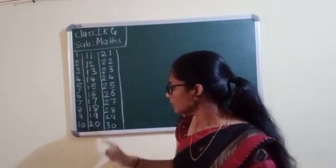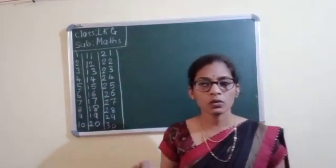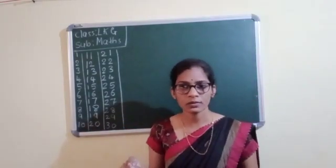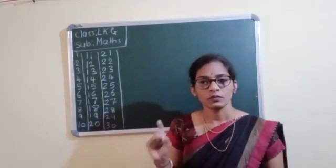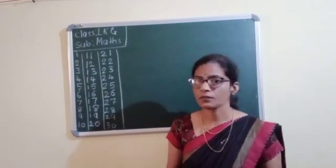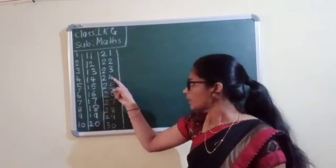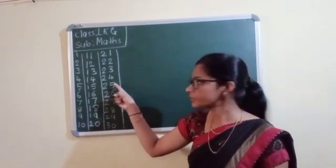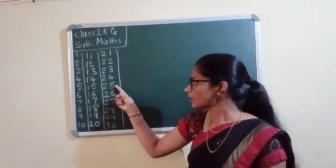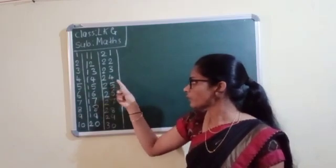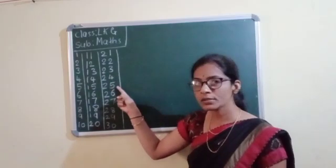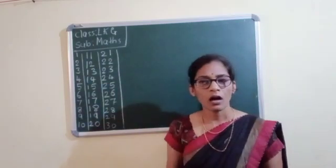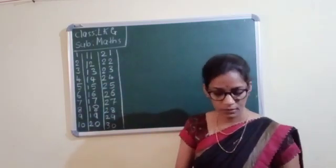And 24 after what? First you look where is the 24 — here is the 24. And after what is the number? 25. So 24 after is 25. This is the after number.